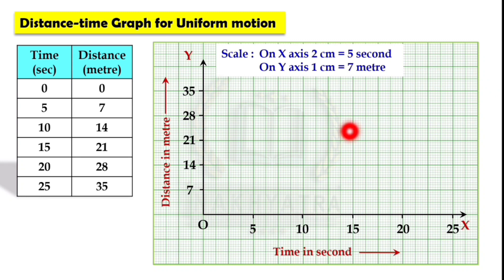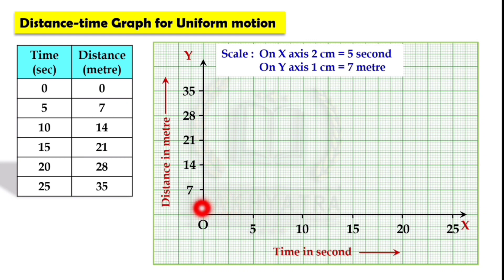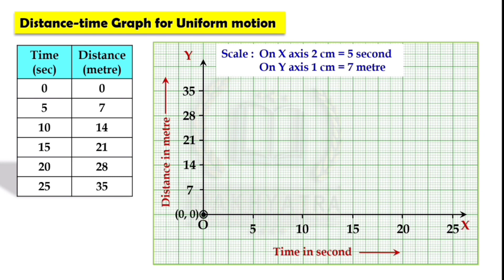On the Cartesian plane, the origin is the point of intersection of the horizontal and the vertical axis. The coordinates of the origin are (0, 0) because at this point x equals 0 and y equals 0.